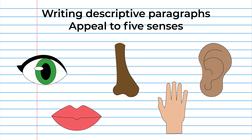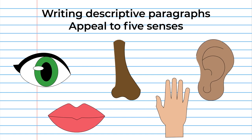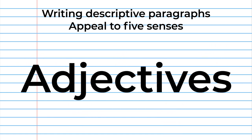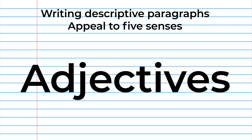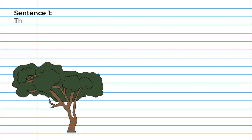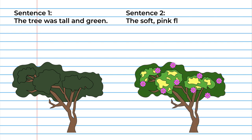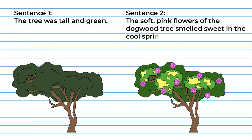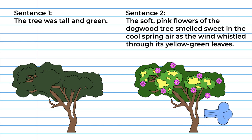You can do this by using descriptive language, usually in the form of adjectives. For example, let's look at two sentences to see the difference. Sentence 1: The tree was tall and green. Sentence 2: The soft pink flowers of the dogwood tree smelled sweet in the cool spring air, as the wind whistled through its yellow-green leaves.